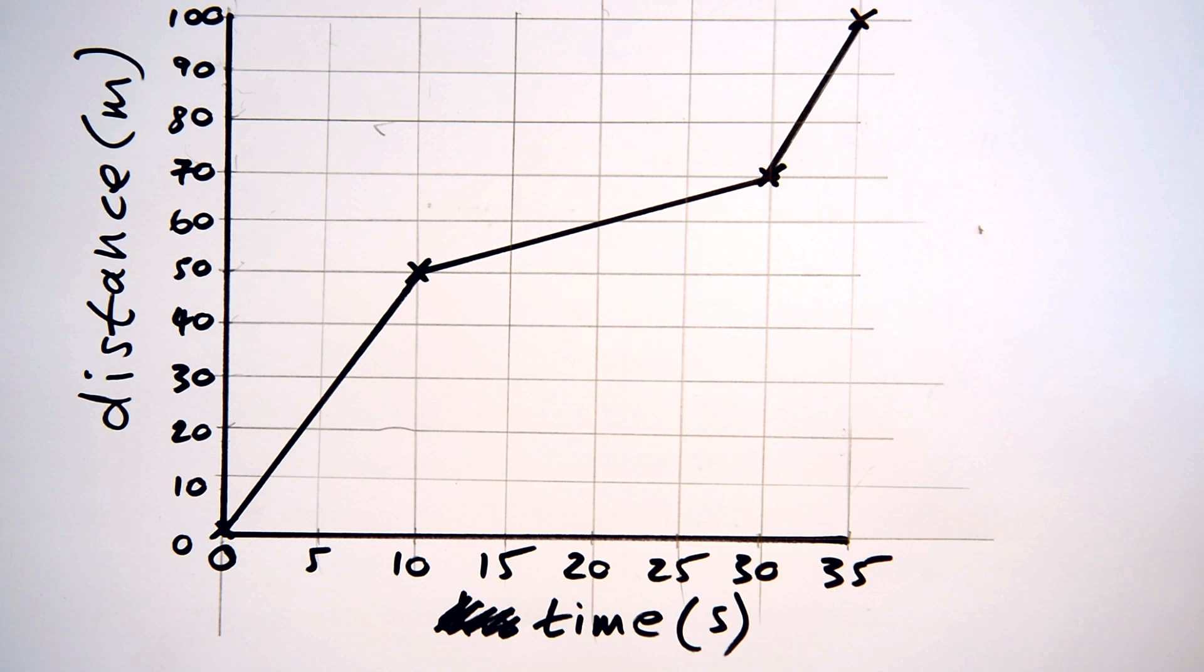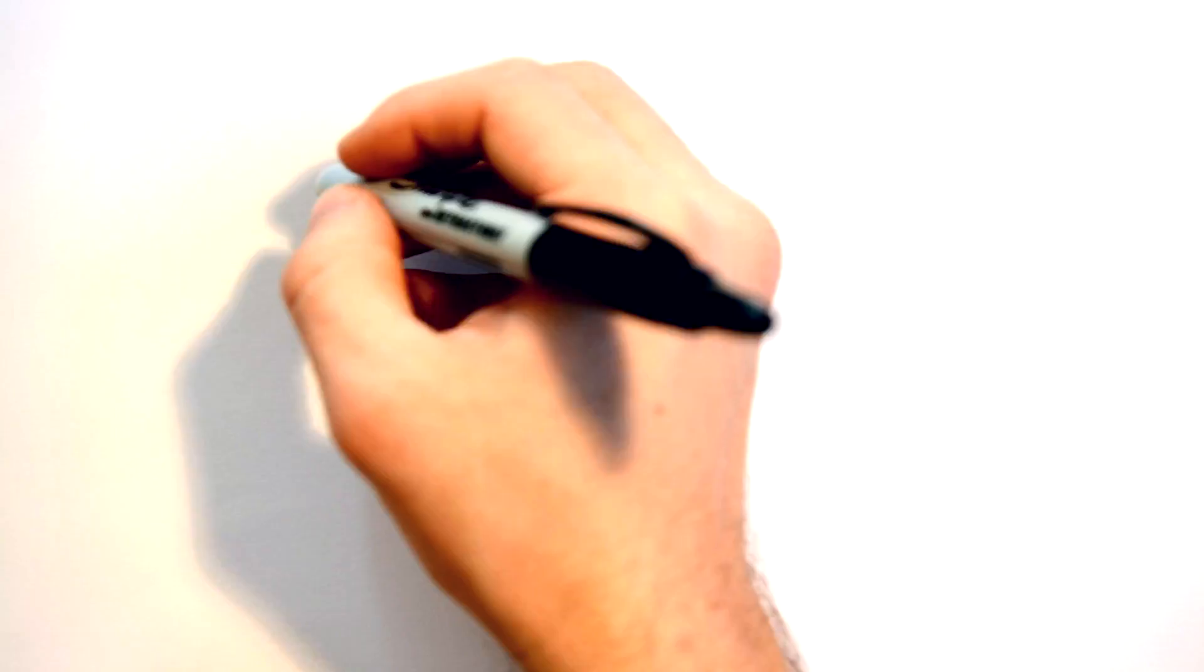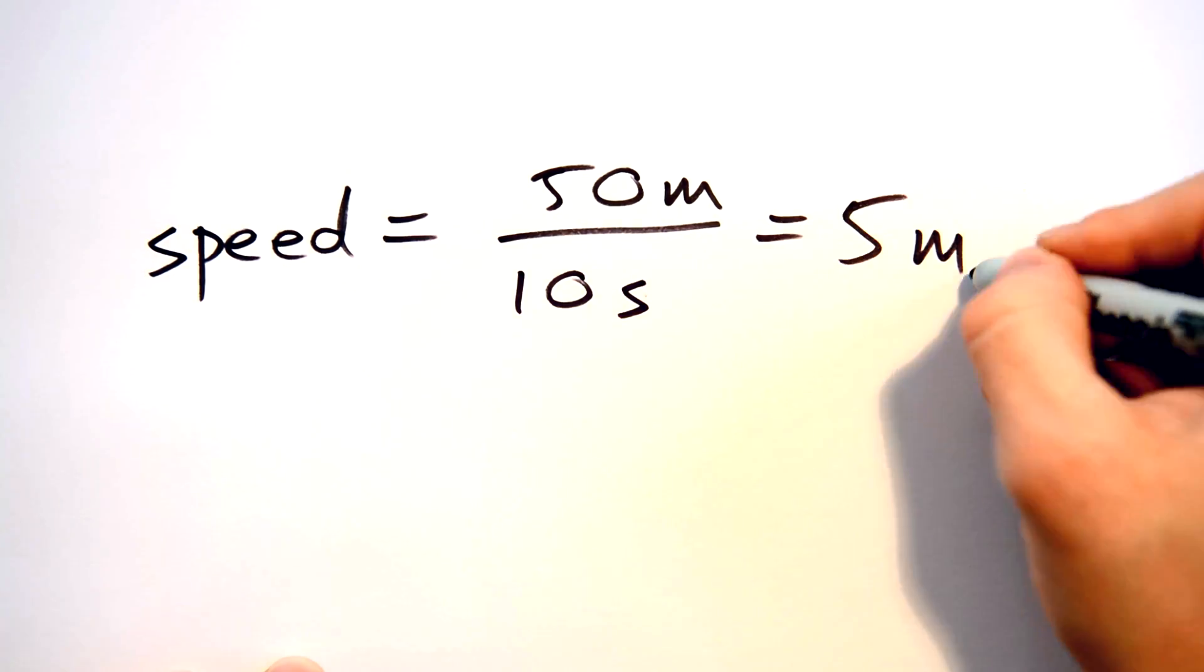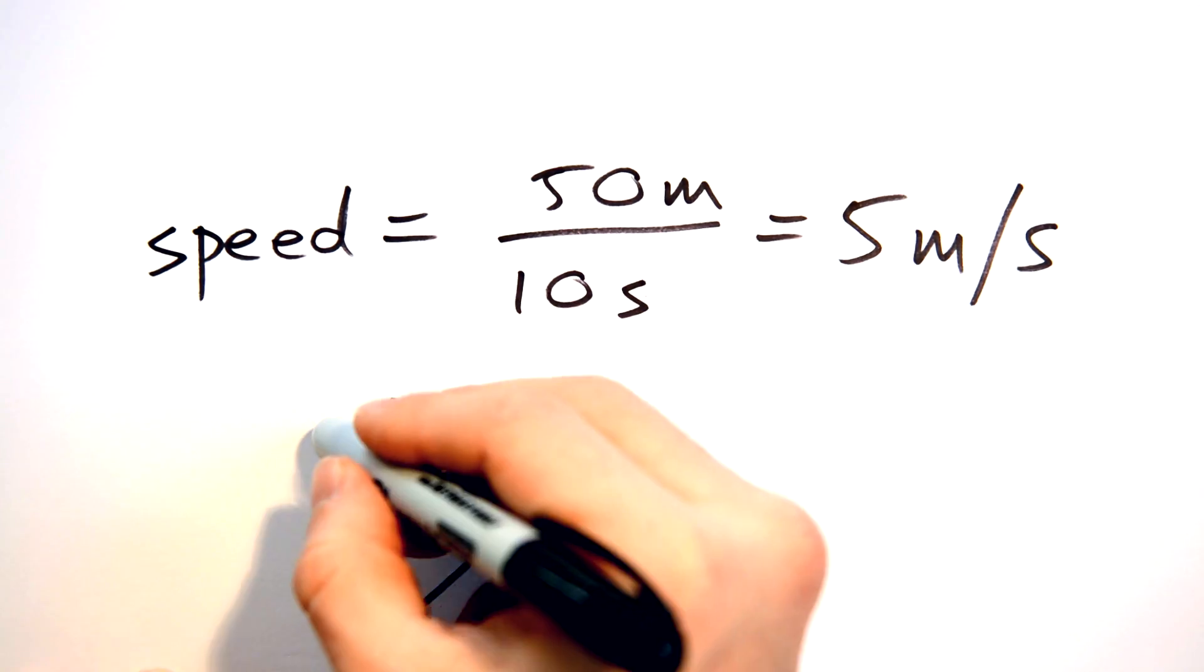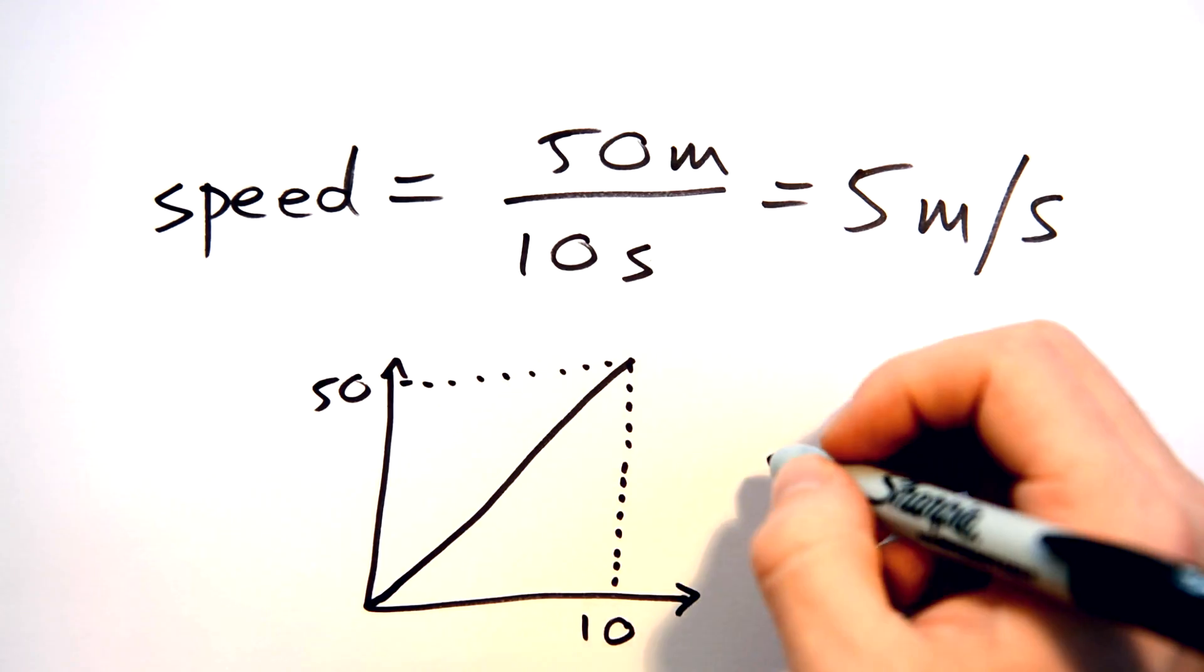Looking at Bob's first part of the journey we can see he traveled 50 meters in 10 seconds, that means his speed is 5 meters per second. What we've just done is calculated the gradient of this bit of the graph.